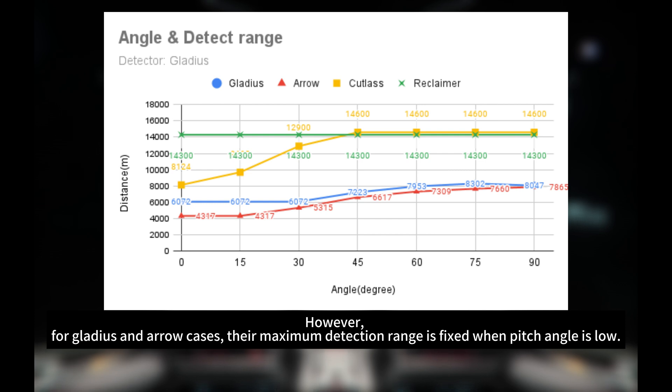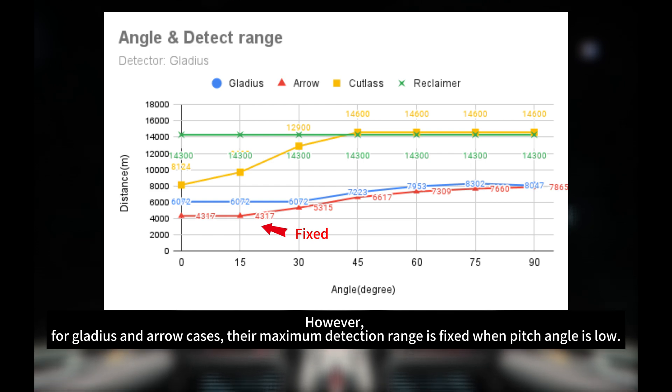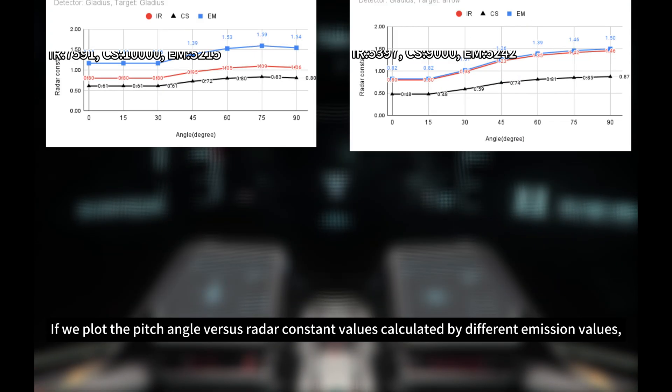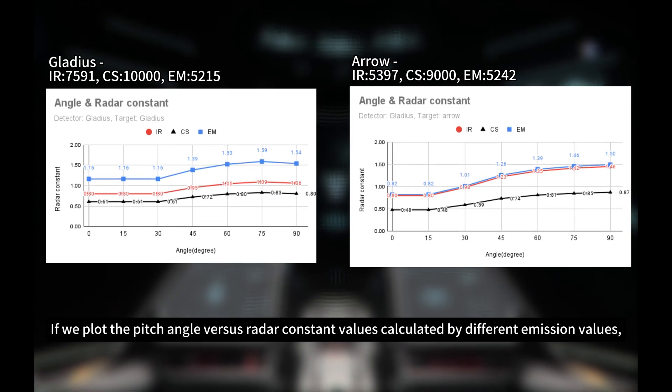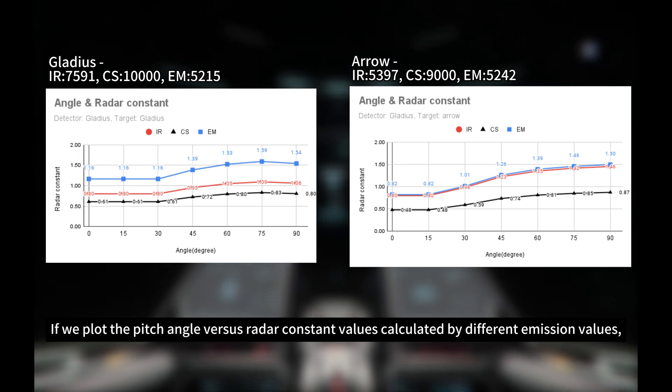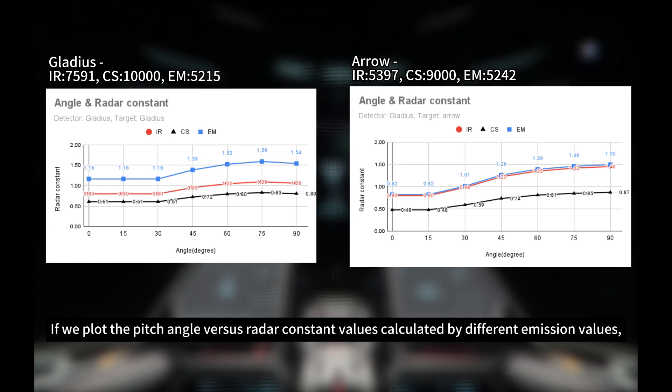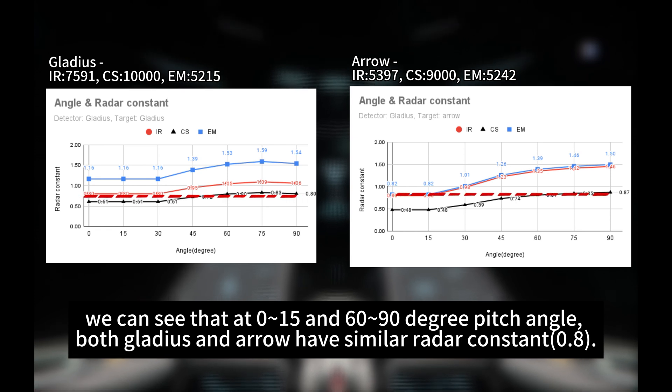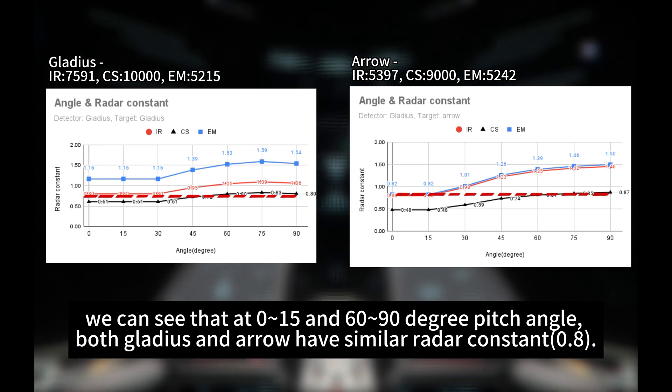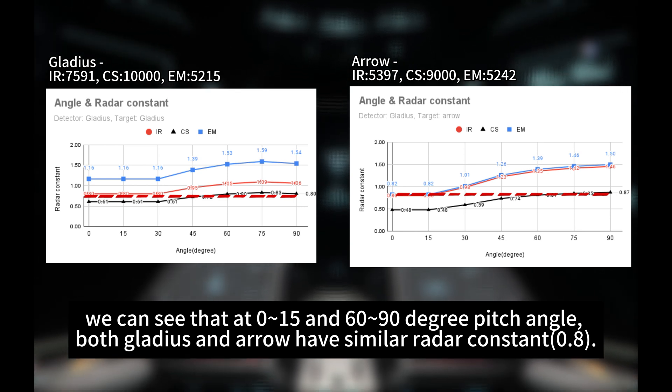Another thing worth noting is the maximum detection range is related to the pitch angle. However, for Gladius and Arrow case, their maximum detection range is fixed when pitch angle is low. If we probe the pitch angle versus radar constants calculated by different emission values, we can see that at 0 to 15 and 60 to 90 degrees pitch angle, both Gladius and Arrow have similar radar constants.